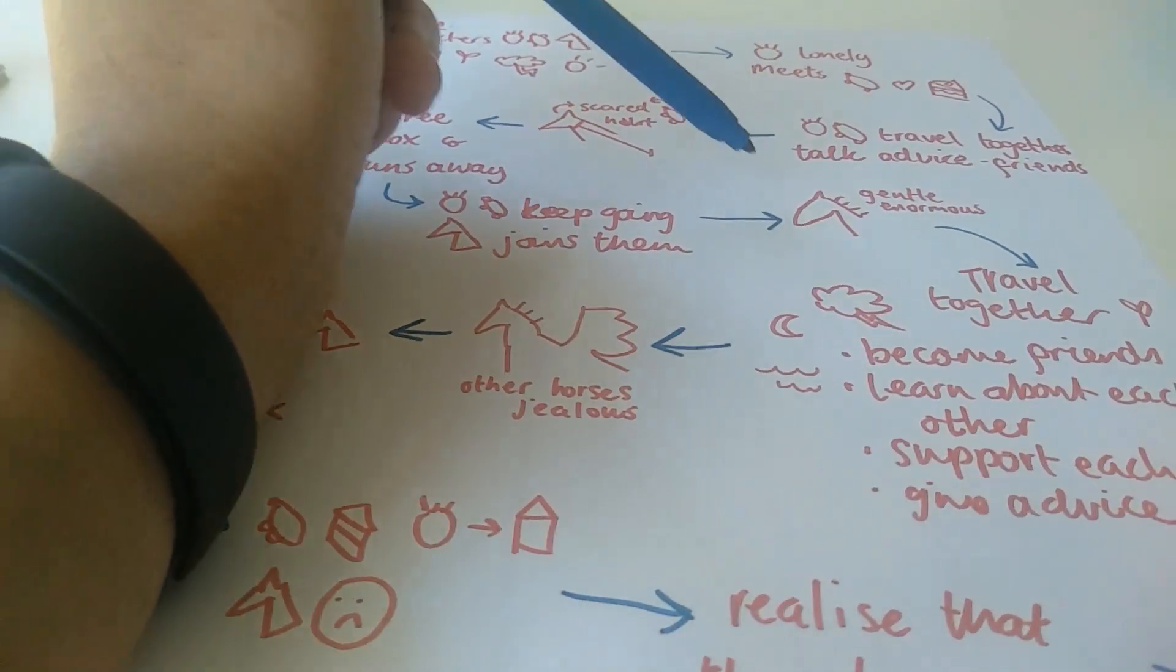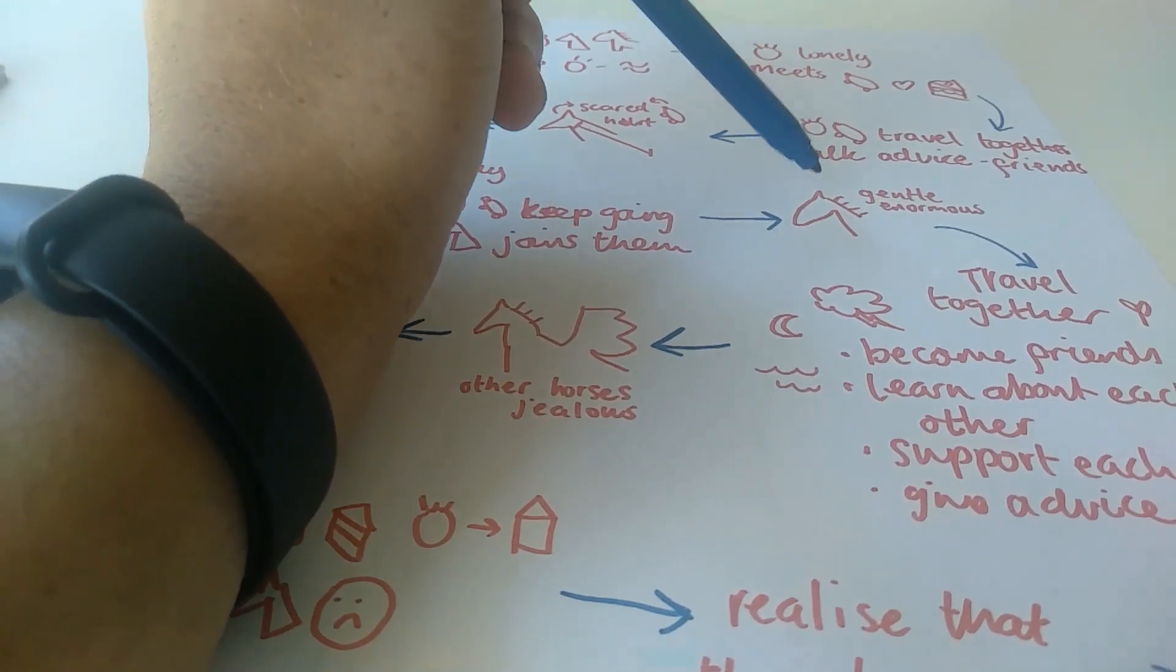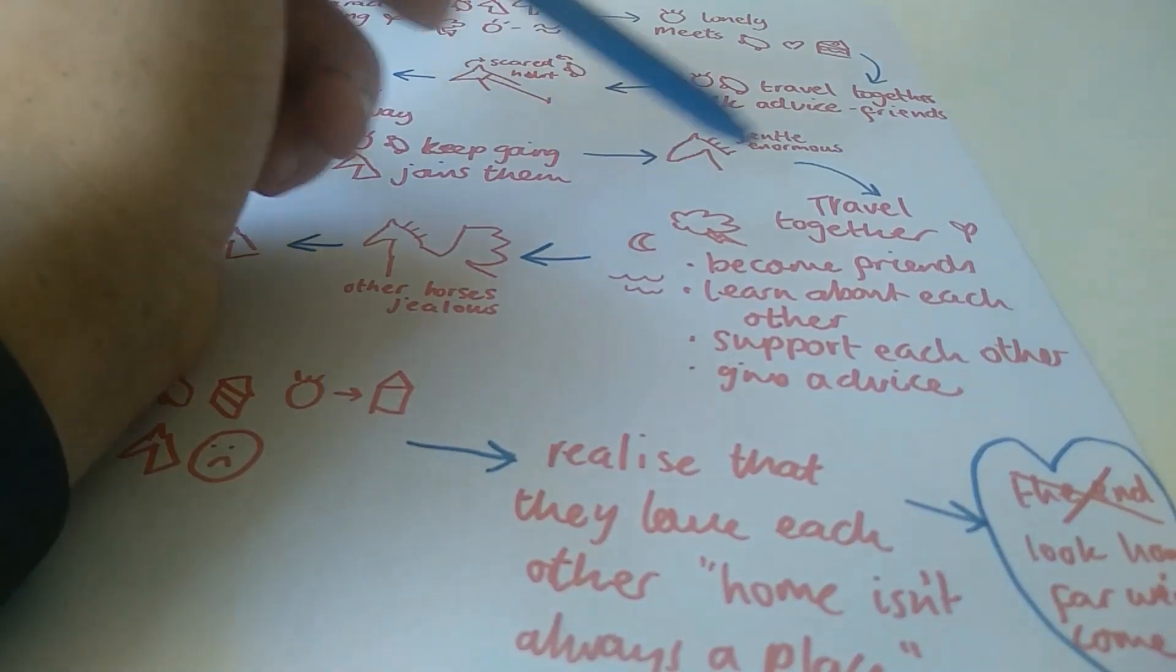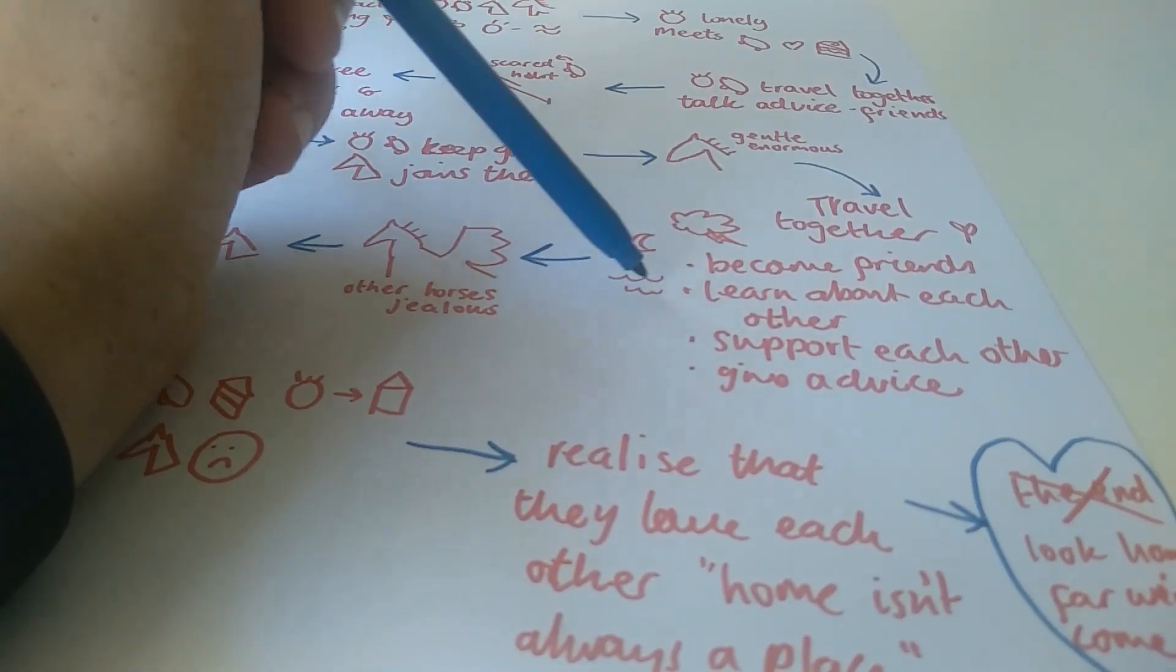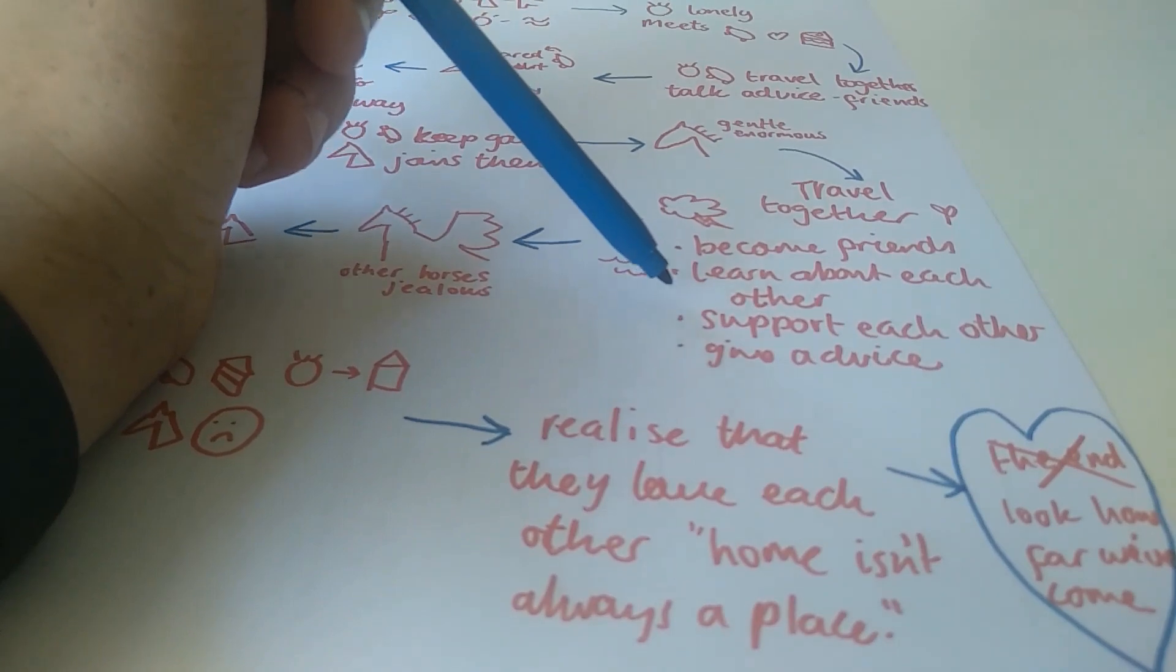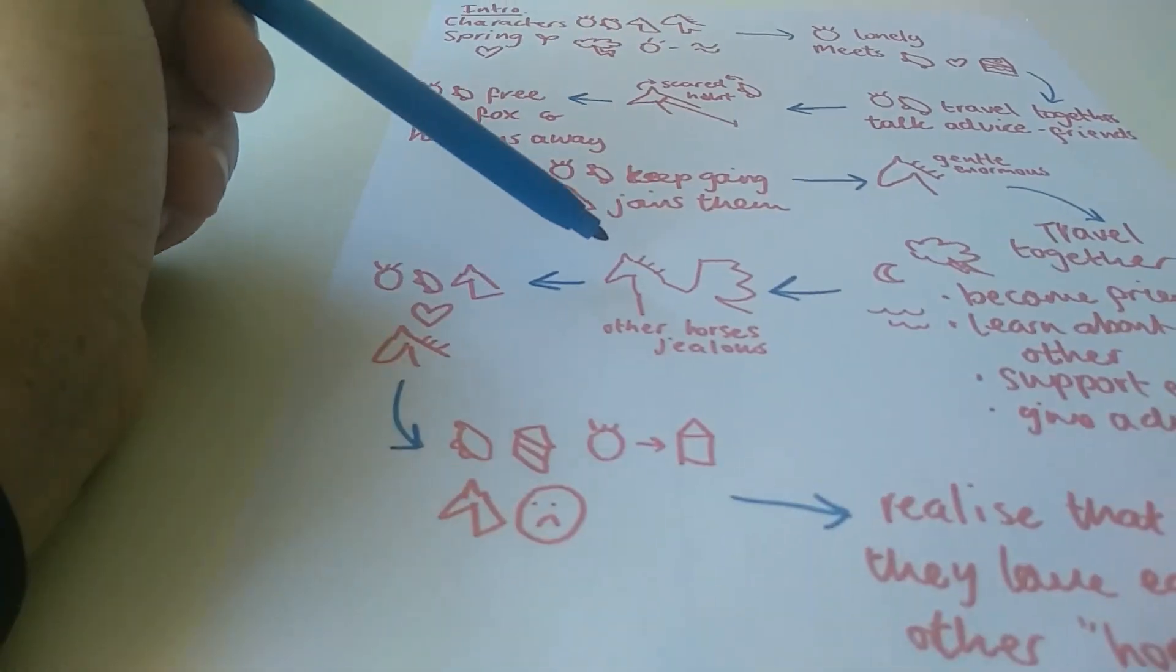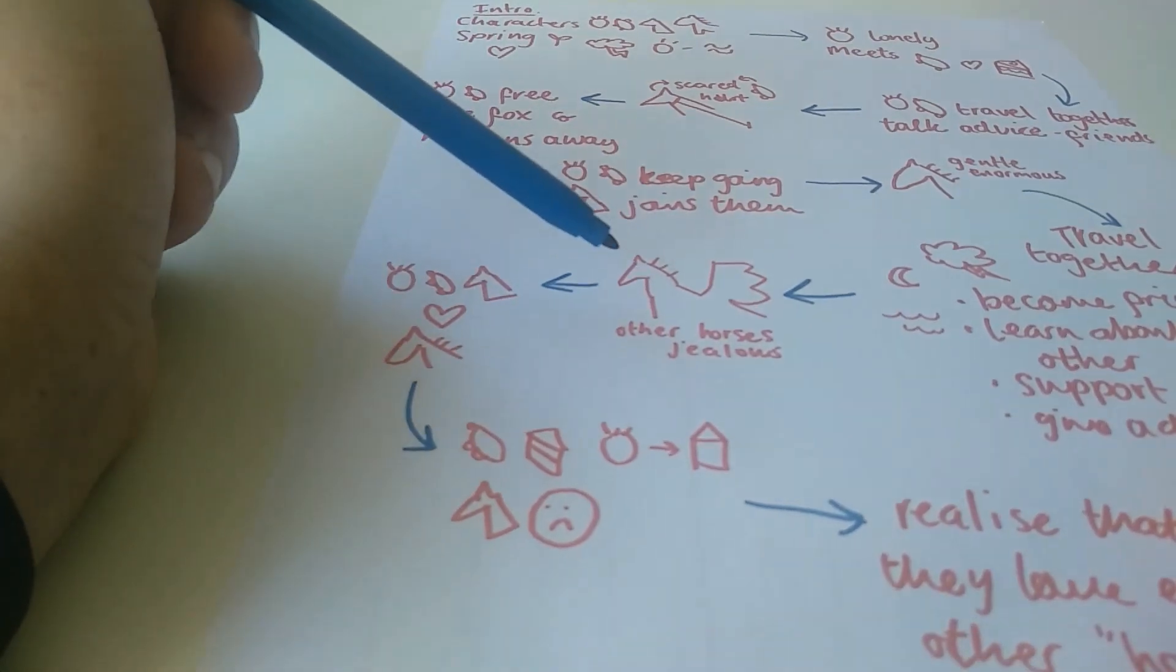So the boy and the mole keep going. And the fox eventually joins them and becomes their friend when he realizes they're not dangerous. And then they meet a horse who is gentle and enormous. And they all travel together through bad weather and through all the springtime weather and scenery and beautiful illustrations. And they become friends and learn about each other and give each other advice and support each other. And they play around in water. And they spend the night staring up at the moon and asking questions. And the horse reveals that he made all the other horses jealous because he could fly. And that's why he was on his own.